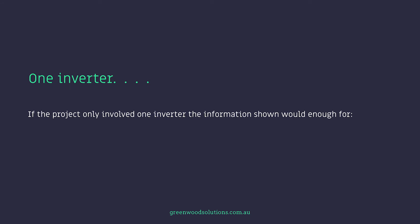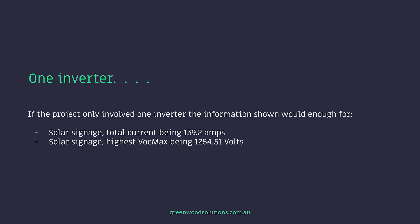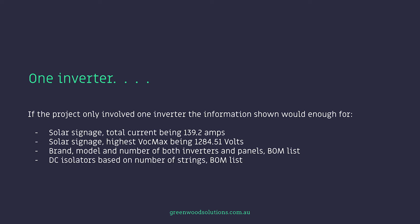If the project only involved one inverter, the information shown will be enough for solar signage: total current being 139.2 amps, the highest VOC MAX being 1,284.51 volts, brand, model, and number of both inverters and panels for the BOM list, and DC isolators based on the number of strings for the BOM list — assuming no parallel strings.